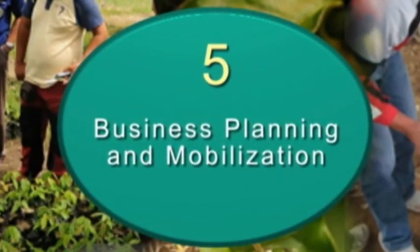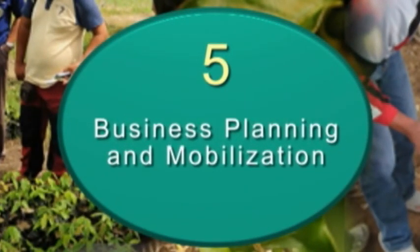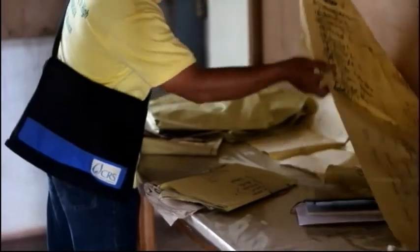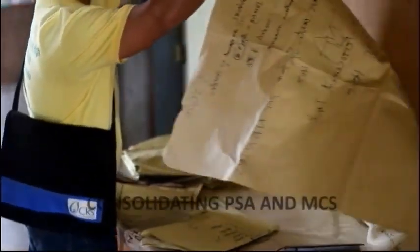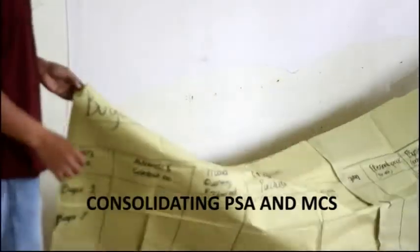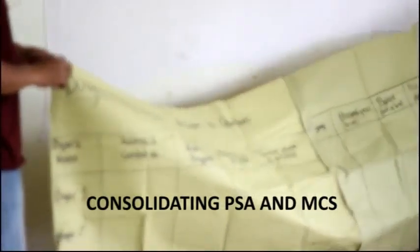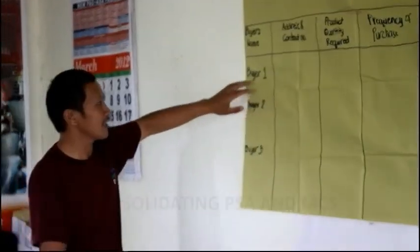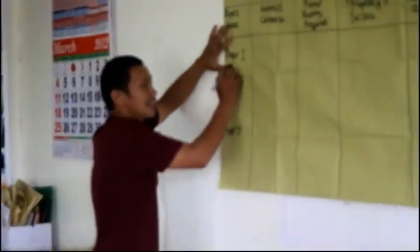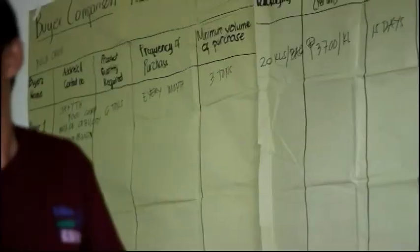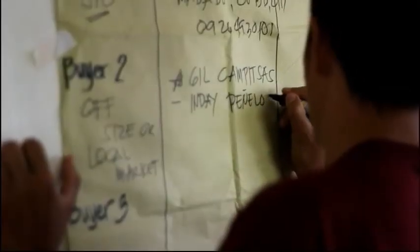Step 5 requires farmer members to prepare a business plan before making that big leap in the conduct of their first product supply to identifying buyers.